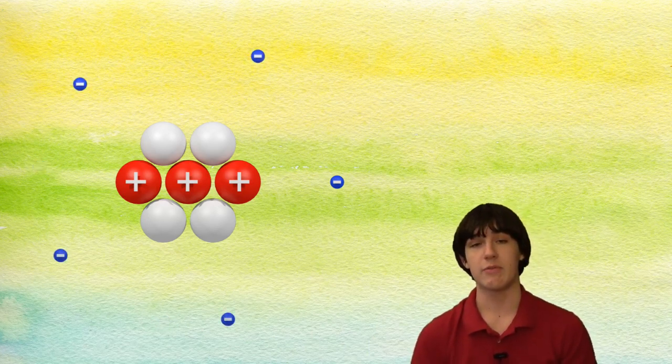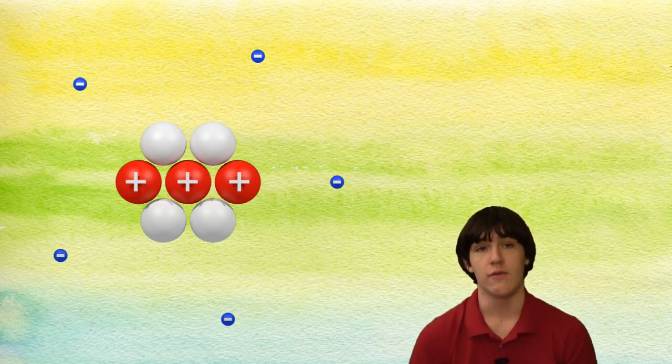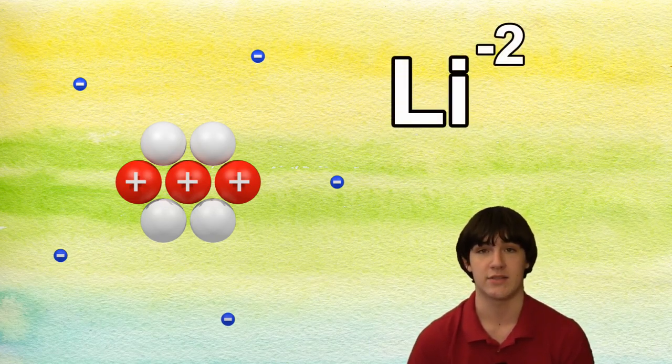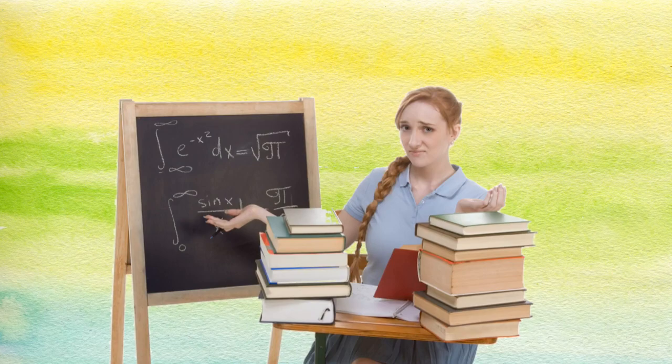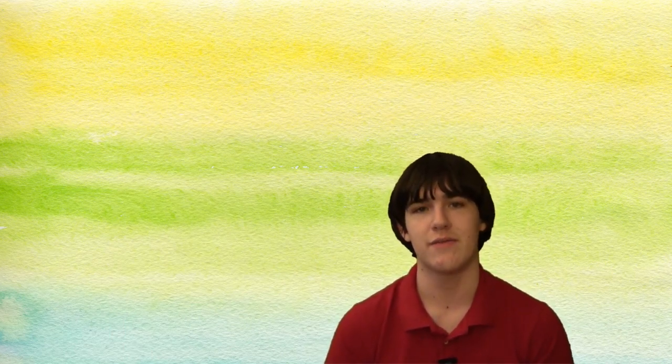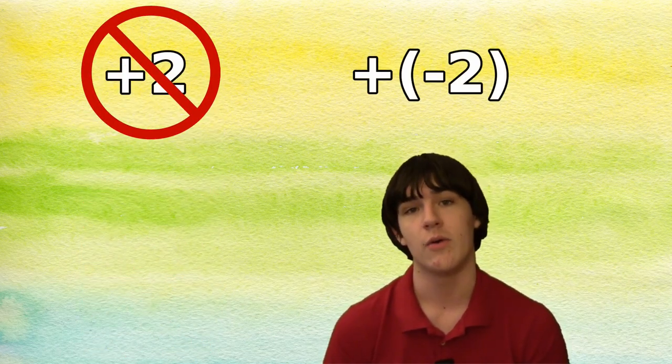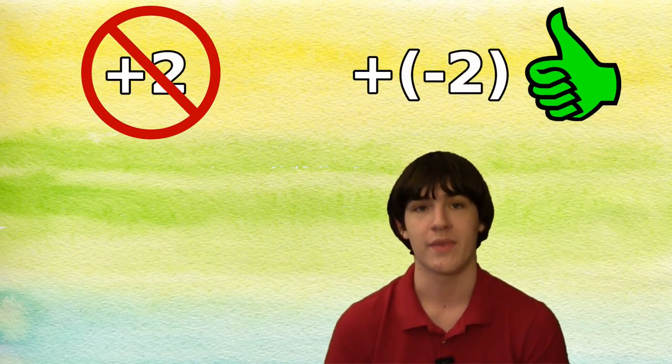Now, how we represent these ions can get a little tricky. For that aforementioned ion with five electrons, we'd represent that as Li-2. I hear you saying, but Connor, that makes no sense. You had two electrons and you were represented as minus two? Didn't you take any math classes? Yes, I have taken some math classes in my day. The confusion lies in the fact that we aren't adding two, we're adding negative two. Let me explain.